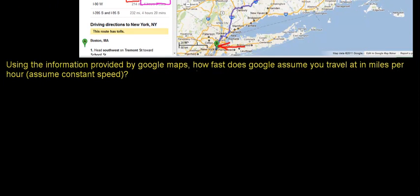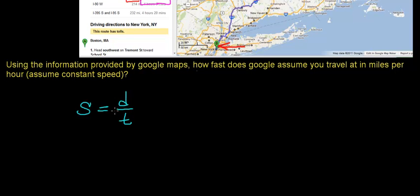To begin this problem, since we're assuming your speed is constant, we can use the relationship that says speed equals the distance you travel divided by the time it takes to travel that distance. Remember, speed is distance per unit of time, and this equation is only valid assuming constant speed — that is, equal distances in equal amounts of time.